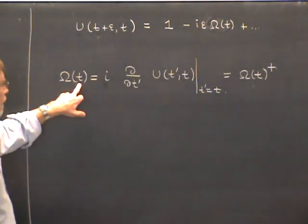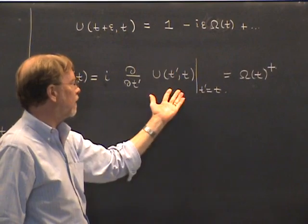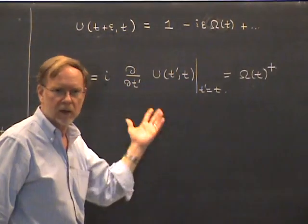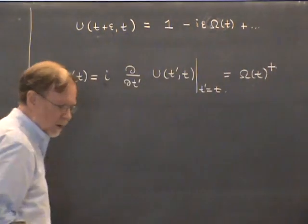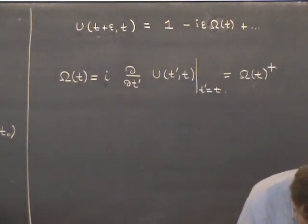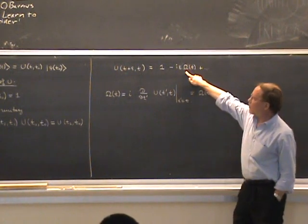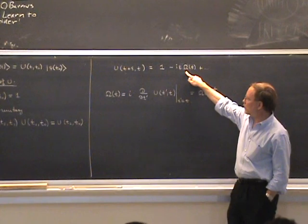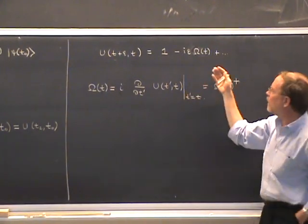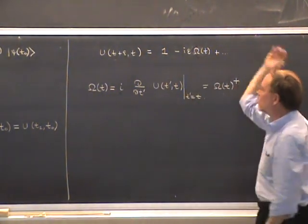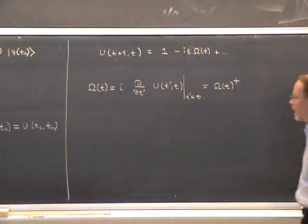Omega depends on time because in the derivative — although we differentiate with respect to t', we then set t' = t — so the right-hand side depends on t and nothing else. There's a special case where Omega does not depend on t, which I'll come to in a moment, but in general it does. Because of this relationship, we say Omega is the generator of time evolution — it's a Hermitian operator responsible for carrying out an infinitesimal time evolution.